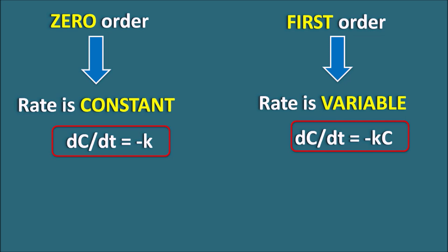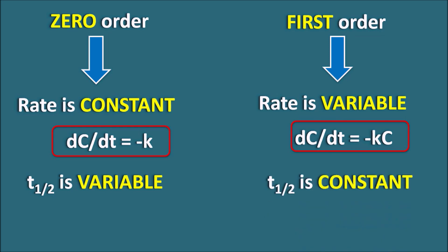Another important difference between zero order and first order is the half-life of the reaction. In zero order the half-life is variable, but in first order the half-life is constant. So this is quite opposite: the rate is constant and half-life is variable in zero order, whereas in first order the rate is variable but half-life is constant.